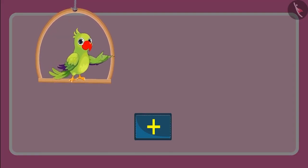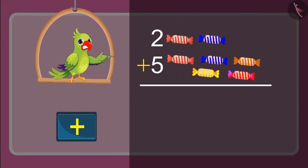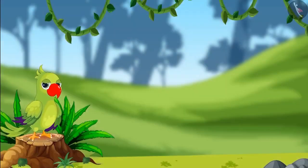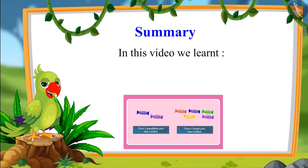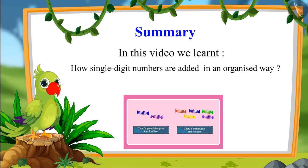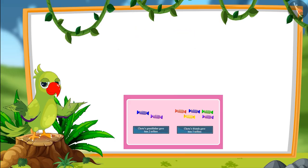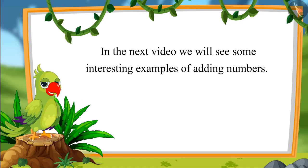Children, do you know what symbol this is? Yes, this is the symbol of addition. We can write it in an organized way — when we added five toffees to two toffees, we got seven toffees. In this video we learned how single digit numbers are added in an organized way and about the symbol used to add numbers. In the next video we will see more interesting examples of adding single digit numbers. Goodbye children!